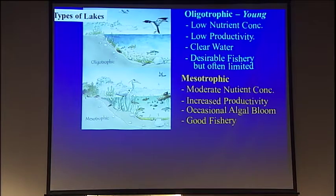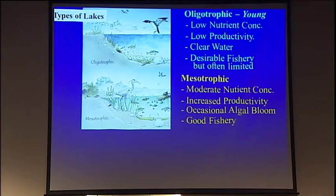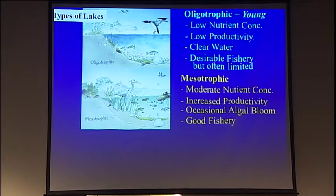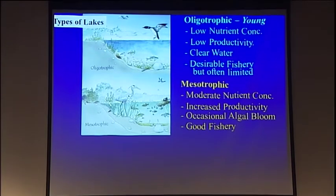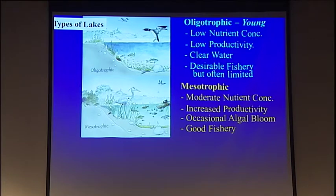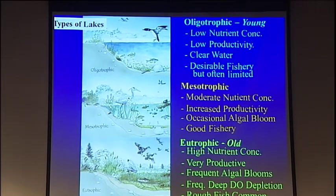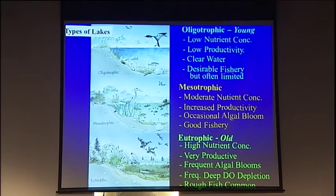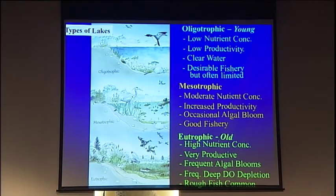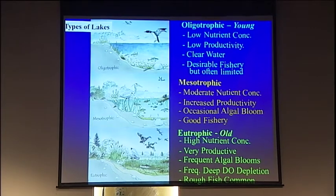As we get a little bit more eutrophic, we have mesotrophic lakes. These are the lakes that have a little bit more weeds in them, a little bit different types of fish. And then finally we have the eutrophic lakes — these are lakes that have weeds along the shoreline, a lot of rough fish, and they have problems with dissolved oxygen.